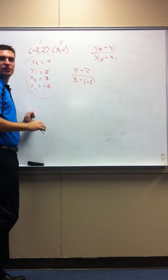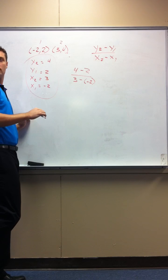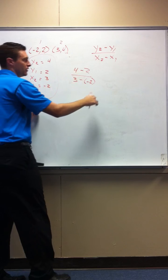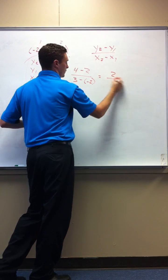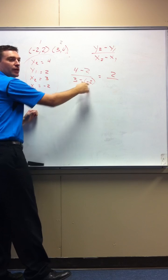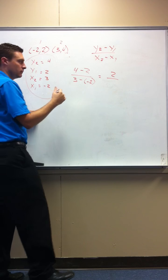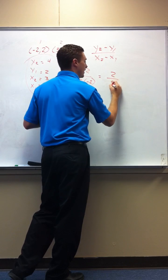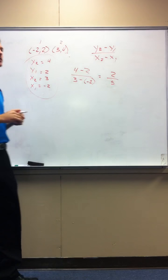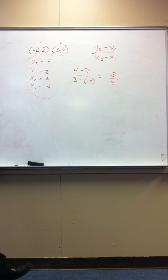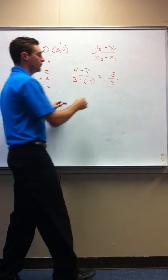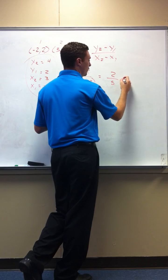Okay. So how would I simplify this? 4 minus 2 is 2. 3 minus negative 2 is 5. Why? Because minus and negative is the same as plus. Right? And 3 plus 2 would be 5. So the slope would be 2 fifths.